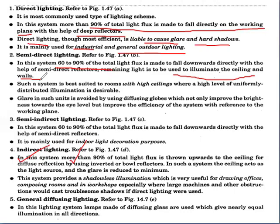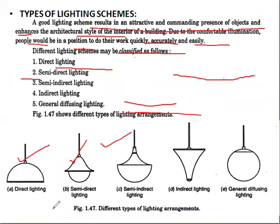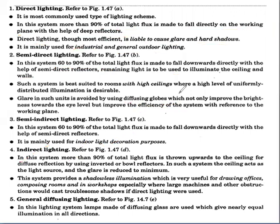In semi-direct lighting, glare is avoided by using a diffusing globe, which not only improves the brightness towards eye level but also improves the efficiency of the system with reference to the working plane. Semi-indirect lighting uses 60 to 90% of the total light flux directed downward using semi-direct reflectors, and is mainly used for indoor lighting and decoration purposes.